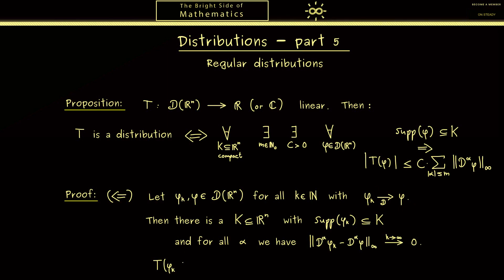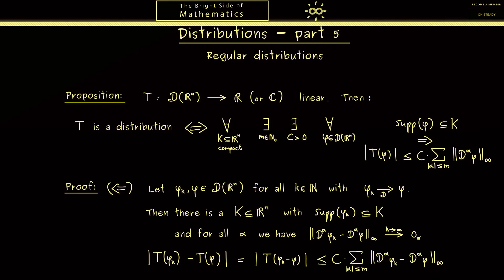Now we just have to check if T of phi_k is convergent to T of phi. In other words, we want that this term goes to 0 when k goes to infinity. By using the linearity we can rewrite that as T of phi_k minus phi. Of course we know this is again a test function with support in K, so we know there exist an m and a c such that this estimate holds. And there you see we have what we want because this term goes to 0 when k goes to infinity. Please don't forget we have a finite sum here. So this is all we needed to show for the first part.